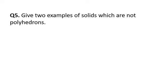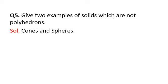Question 5: give two examples of solids which are not polyhedrons. Polyhedrons are solids with flat faces. Non-polyhedrons are solids whose surfaces are not flat. Spheres and cones are examples of solids which are not polyhedrons. You can also include cylinders. You need to write any two out of cones, spheres, and cylinders.